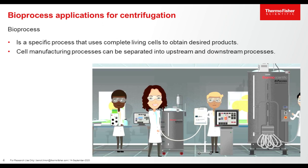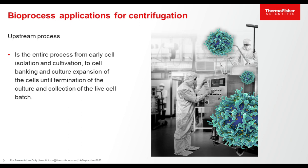Let us first remind ourselves what bioprocess is. It is a specific process that uses complete living cells to obtain a desired product. The cells are used as a factory to produce the product of interest. The process is made of upstream and downstream processes, which are defined in the next slides.